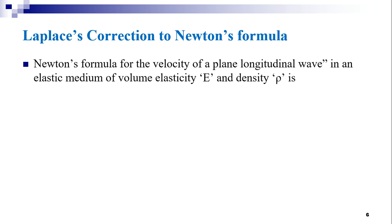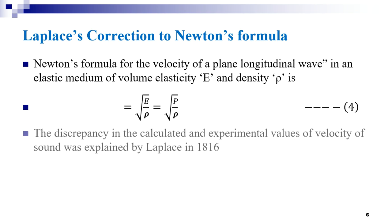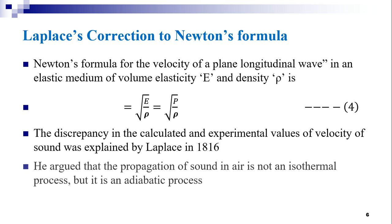Newton's formula for the velocity of a plane longitudinal sound wave in an elastic medium of volume elasticity E and density ρ is V = √(E/ρ) or √(P/ρ). Since there was a discrepancy between theoretical and experimental values, the correct velocity of sound was explained by Laplace in the year 1816. According to Laplace, the propagation of sound wave in air is not an isothermal process as assumed by Newton.